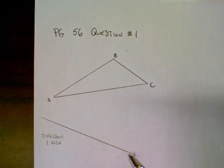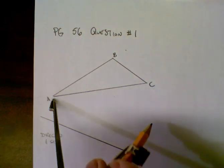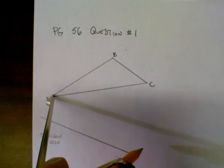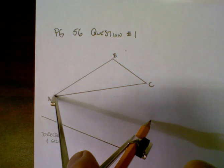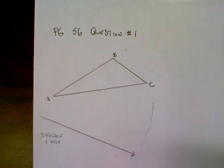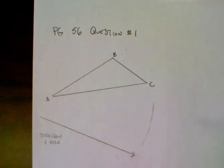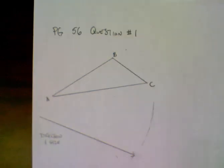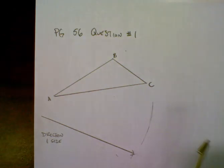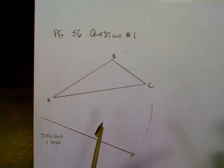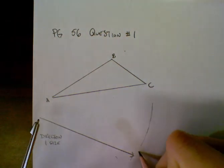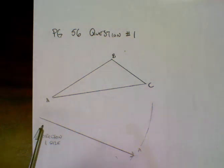Once we know the actual size, we take our compass. We put the point on point A of our figure and draw an arc. That arc we're going to label as arc A. The reason we label it is because we need to make sure that we keep track of which distance corresponds to which point, so we put a little A down there for arc A.